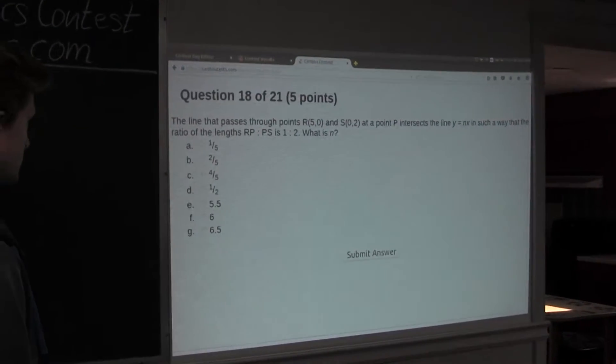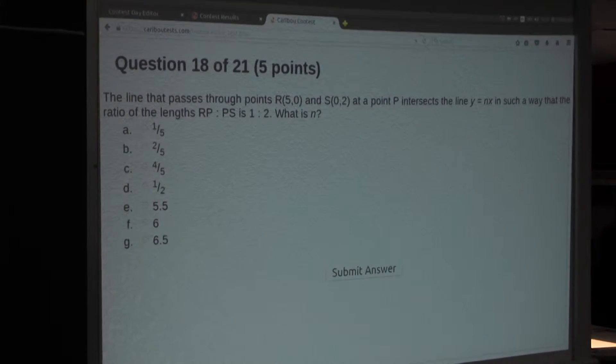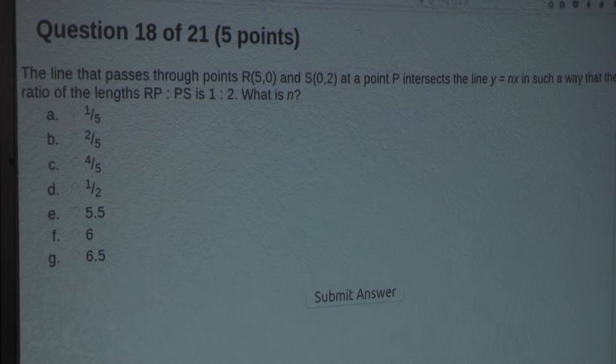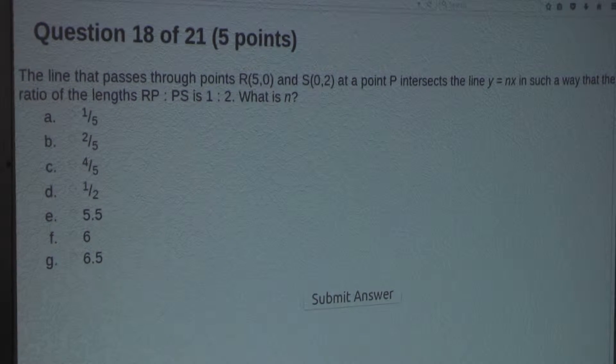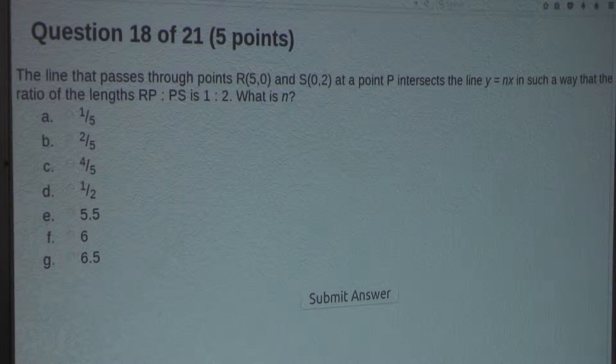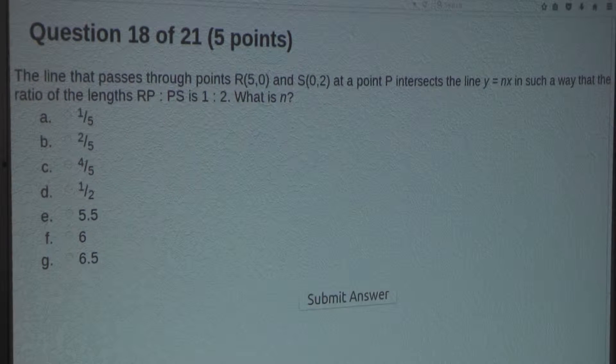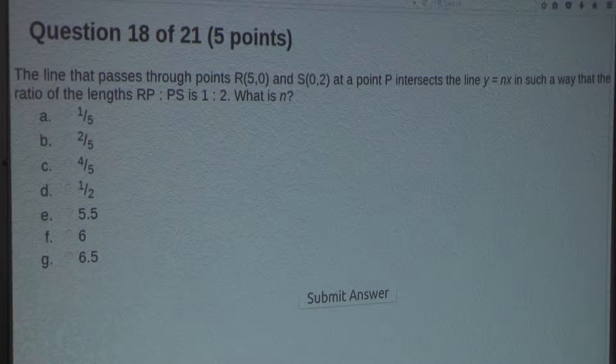So the question is: the line that passes through points R(5,0) and S(0,2) at a point P intersects the line Y equals NX in such a way that the ratio of the lengths RP to PS is 1 to 2. What is N?